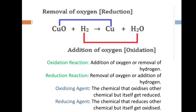In this reaction the oxidizing agent is copper oxide. The oxidizing agent oxidizes the other chemical but itself gets reduced. The reducing agent in this reaction is hydrogen. Hydrogen acts as a reducing agent — it reduces the other chemical but itself gets oxidized. So this is the whole concept of the redox reaction.